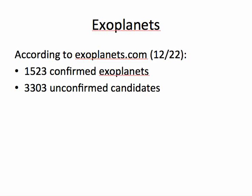Exoplanets. According to exoplanets.com, on the 22nd of December, year 2014, there were over 1,500 confirmed exoplanets, and over 3,000 unconfirmed candidates, so things that they think might be exoplanets, but they weren't really sure.